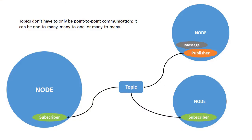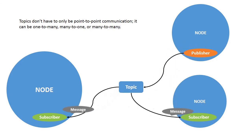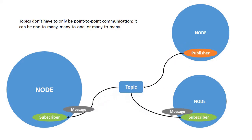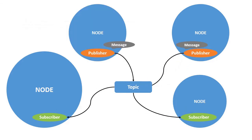An important thing is that there can be many publishers publishing on the same topic, and similarly many subscribers subscribing to the same topic — as you can observe in the animation where one publisher publishes and two subscribers receive it. Also, the publisher doesn't know anything about the subscriber, and the subscriber doesn't know anything about the publisher; they're just connected using topics, and data flows only one way. We use the publisher-subscriber model mostly when we need to continuously broadcast messages, for example broadcasting the joint states of a robot.